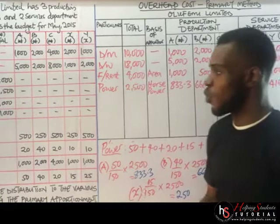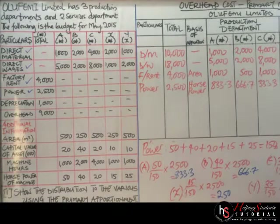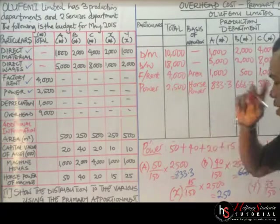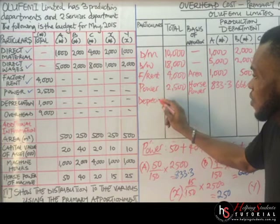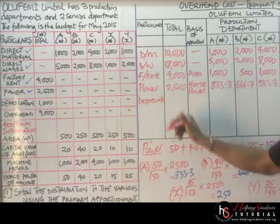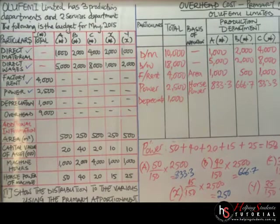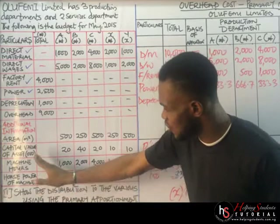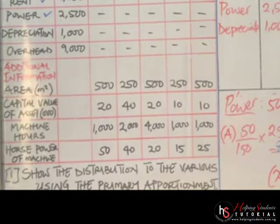We record those power apportionment values in each department column: A = 833.3; B = 666.7; C = 333.3; X = 250; Y = 416.7. We are now done with power and move on to the next item, which is depreciation, with a total of 1,000.